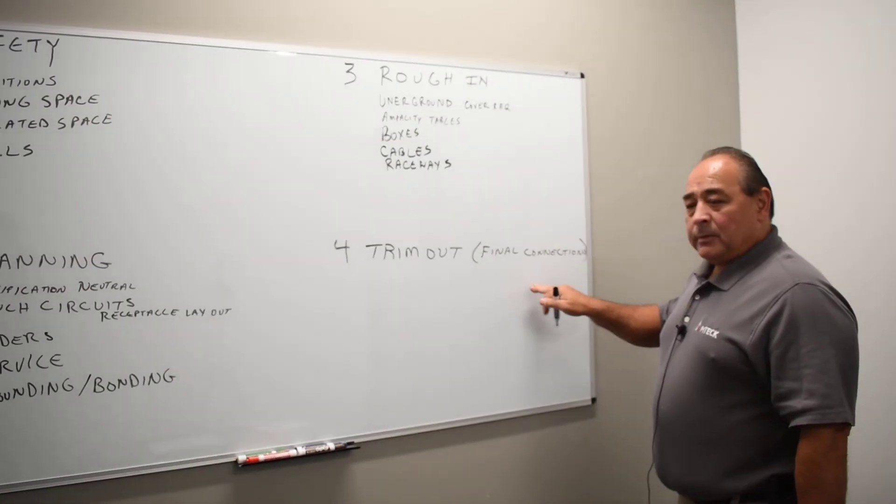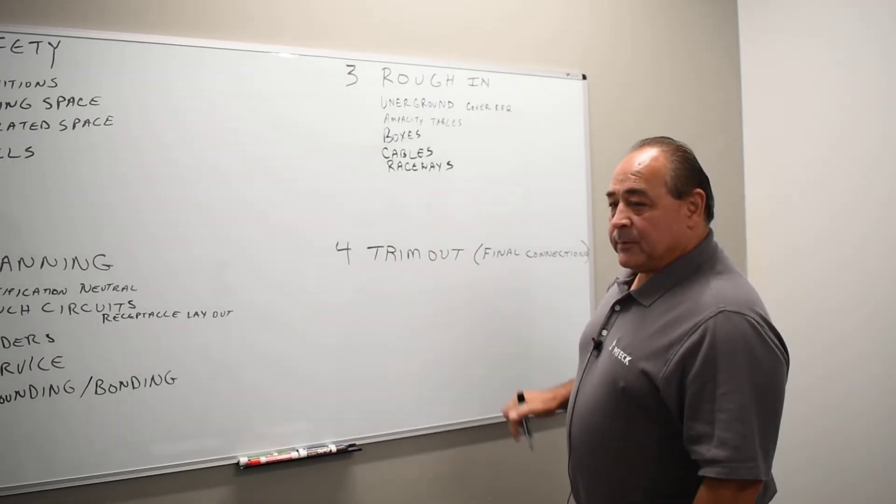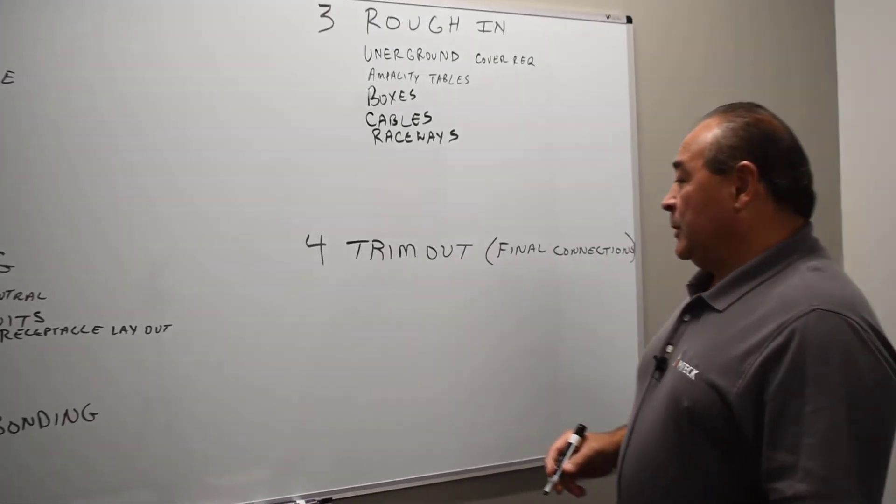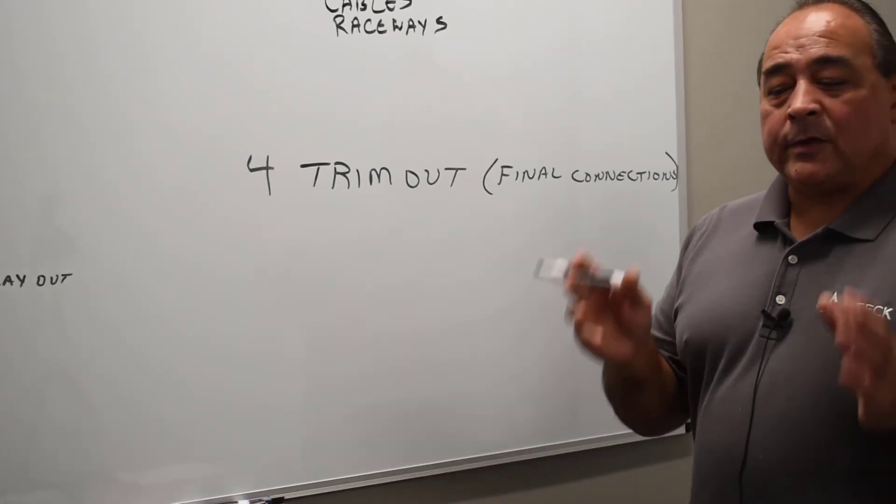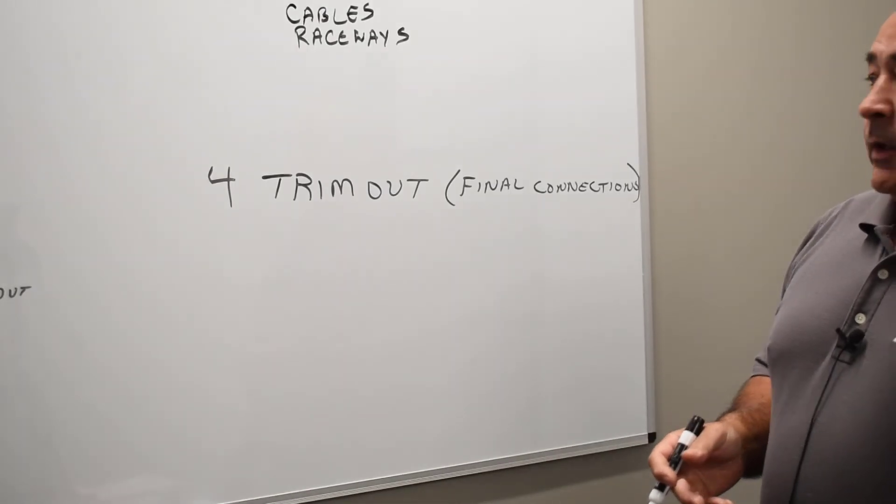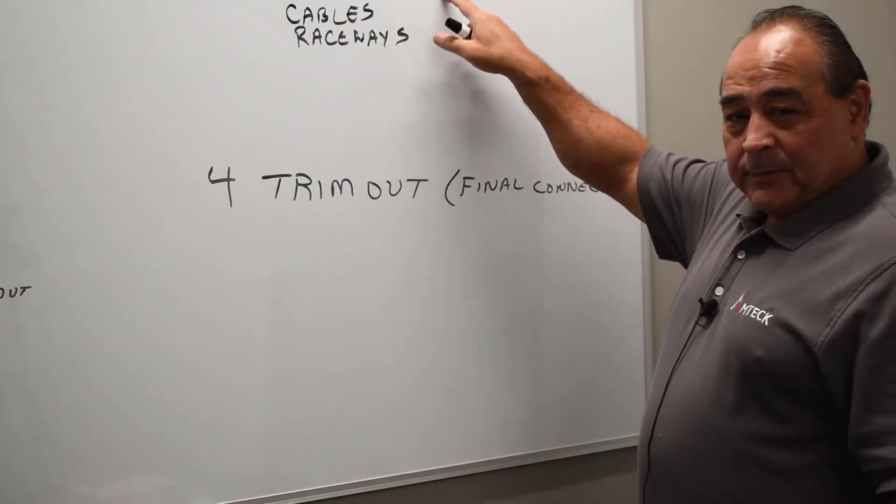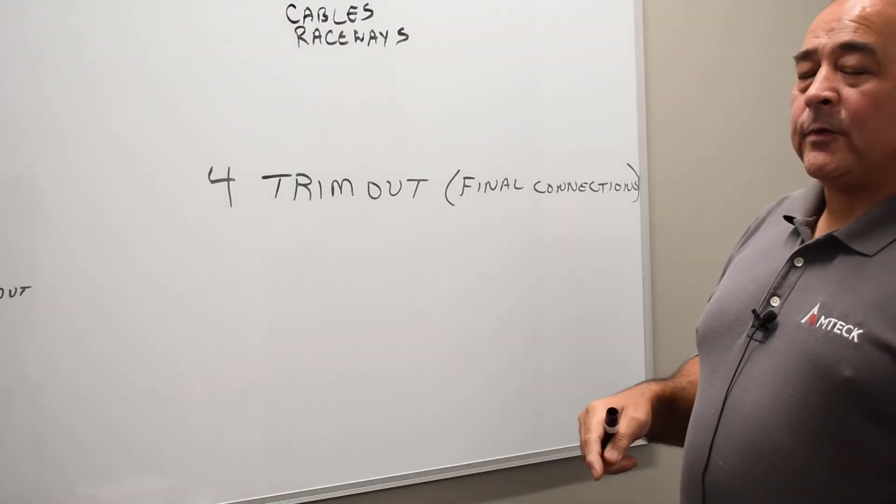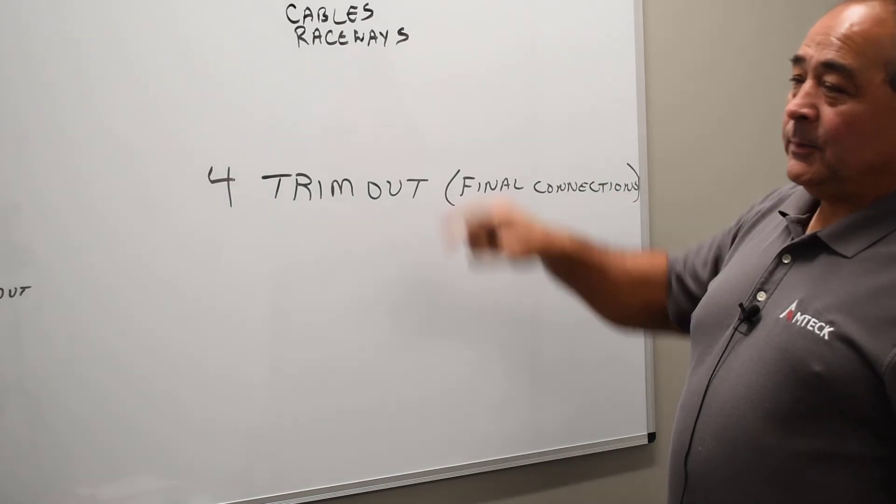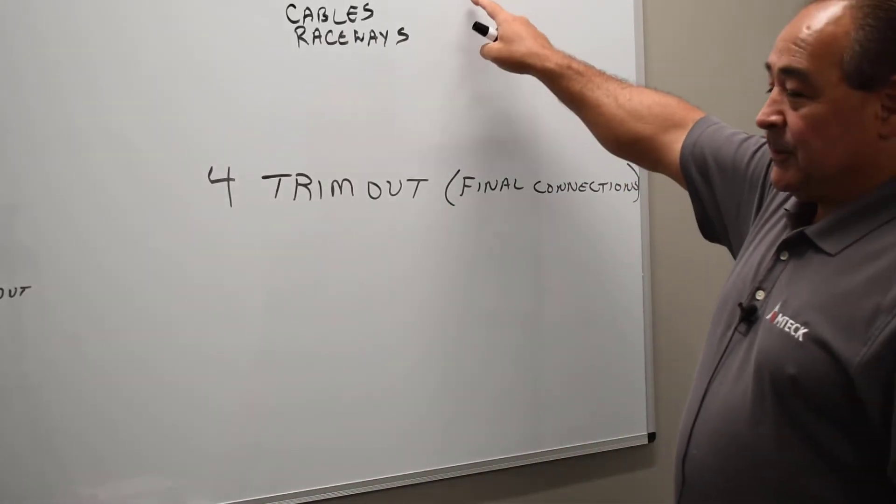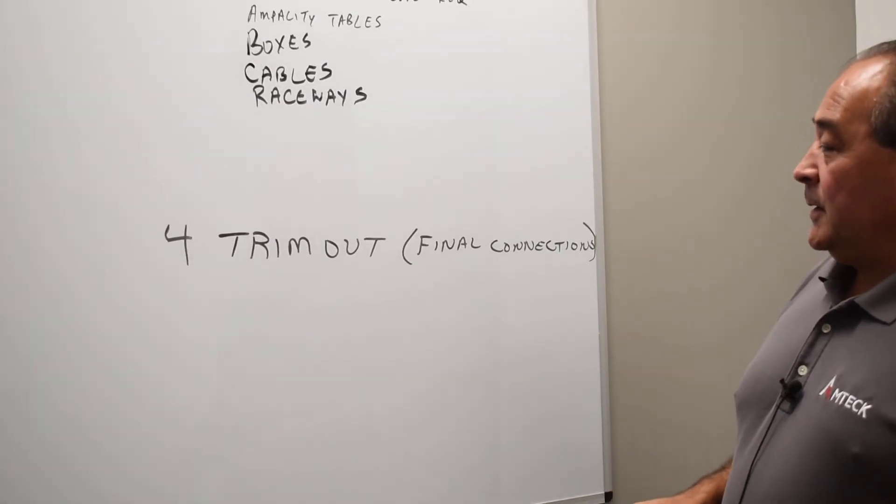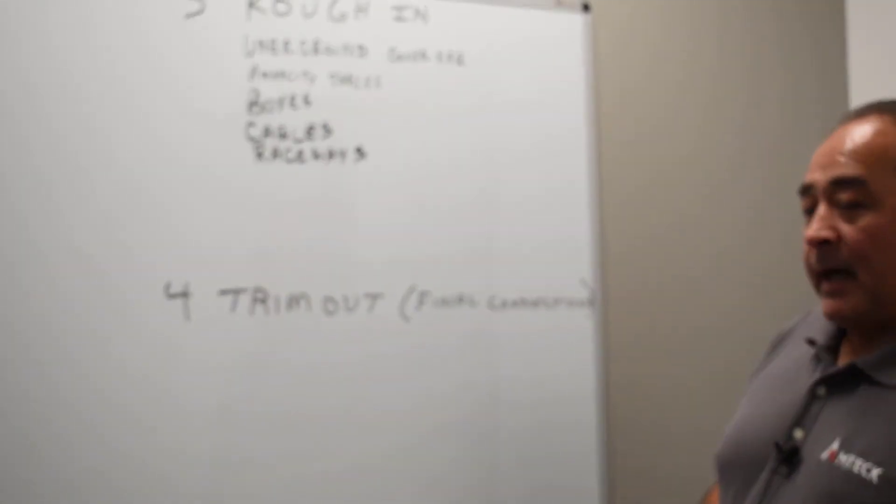So the last part of the job when you're making the final connection, that means you're touching whatever it is for the last time. You put a box in the wall, Chapter 3. You run a cable to that box, Chapter 3. You run a conduit for that home run, Chapter 3. You pull wire through the raceway, Chapter 3. When the drywall is on and you're putting the receptacle in the box, putting the faceplate on, Chapter 4.